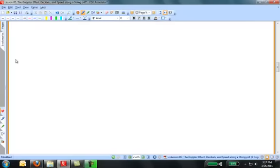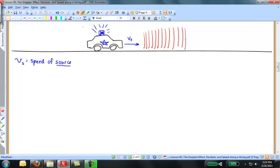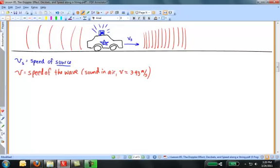First, let's sketch a diagram and label some variables. Let's suppose I have a source, maybe it's a police car with a siren blaring that's moving along the road with a speed Vs for the speed of the source. The speed of the sound in the material we'll call V, the speed of the wave in air. For most problems, that number is going to be between 340 and 345 meters per second for sound in air. If the police car were sitting still, it produces a certain frequency F, the frequency of the source.